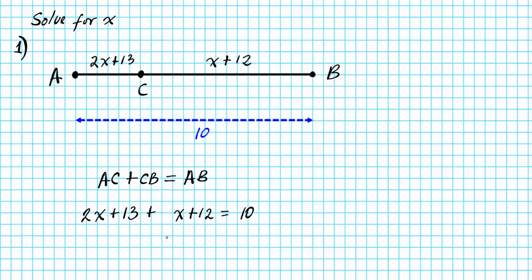Now we're going to use our algebra skills to solve this multi-step equation. On the left side there are multiple terms, so we're going to start by combining like terms. 2x and x are first-degree variables in terms of x, so they are like terms. Adding the coefficients — x has a coefficient of 1 — so 2x plus 1x gives us 3x. The two constants on the left side are 13 and 12, which combine to yield 25. So we have 3x plus 25 equals 10.